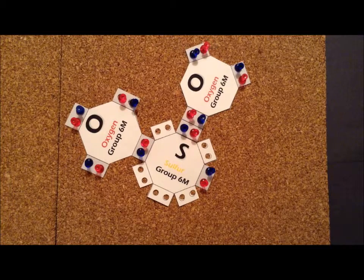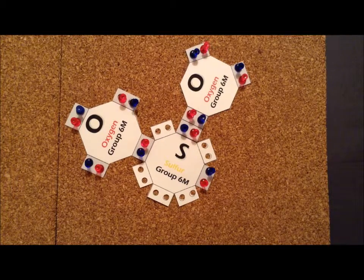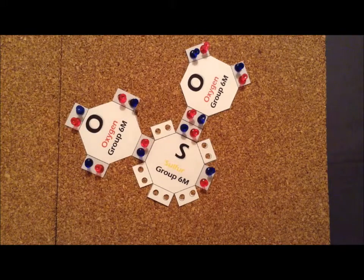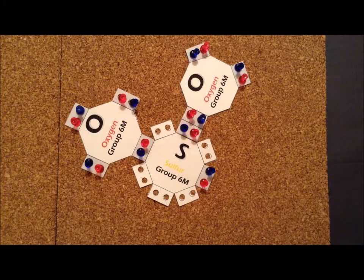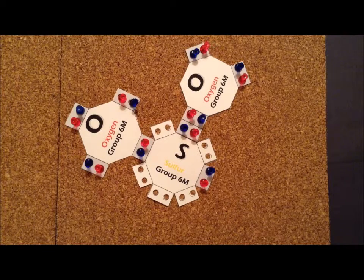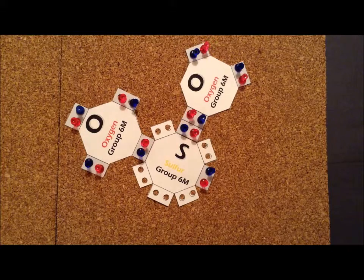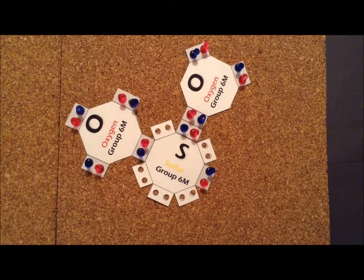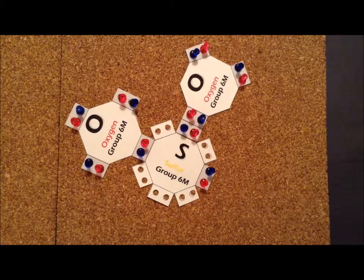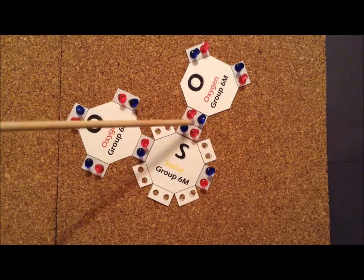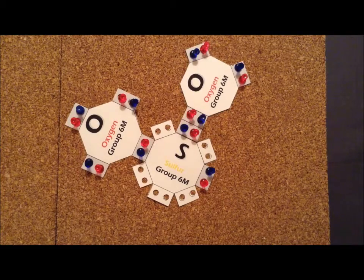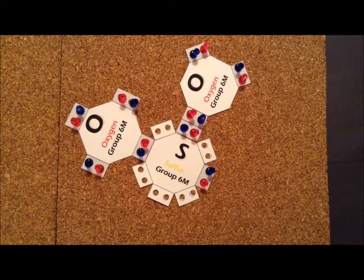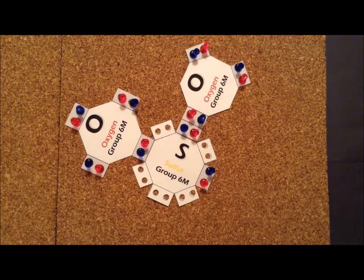Sulfur is in exactly the same family as oxygen, and we simply replaced the center oxygen atom of ozone by sulfur. We would expect that we could create an analogous structure between sulfur dioxide and ozone. And that's exactly true. We end up having a single bond over here and a double bond over here.